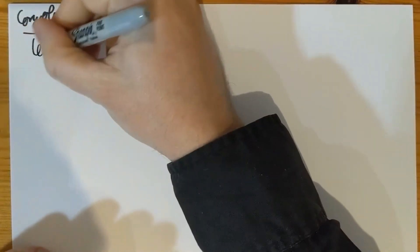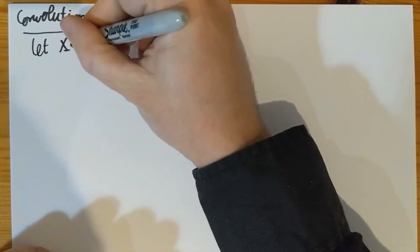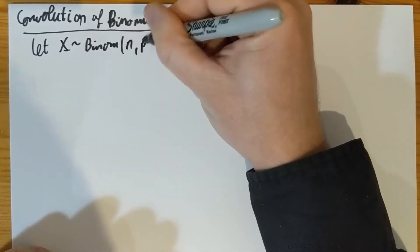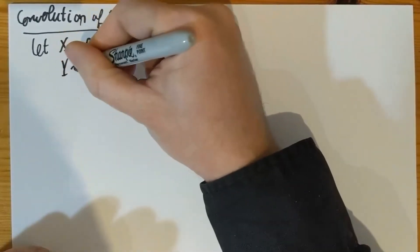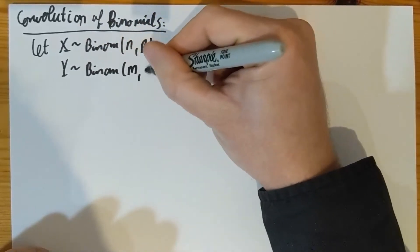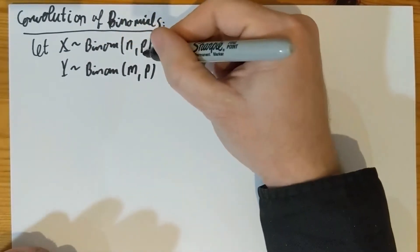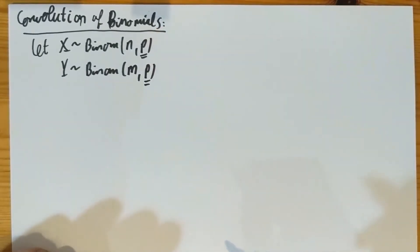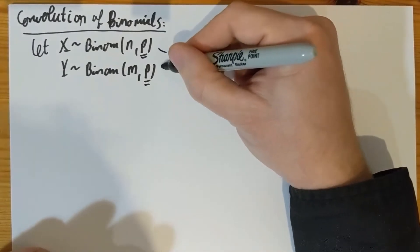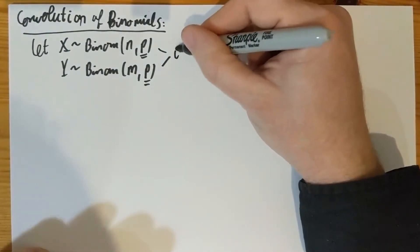Hi, I will show you now what happens if you convolve two binomial distributions. So let X be a binomial of parameters N and P, let Y be a binomial of parameters M and P. Notice that the P parameters are the same. I'm only going to show this when the P parameters are the same. If they are different, things are much more complicated. And of course these guys are independent.